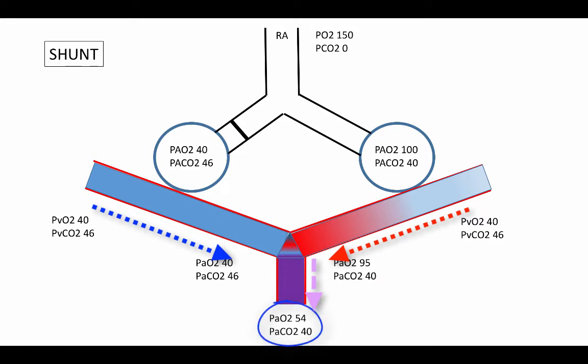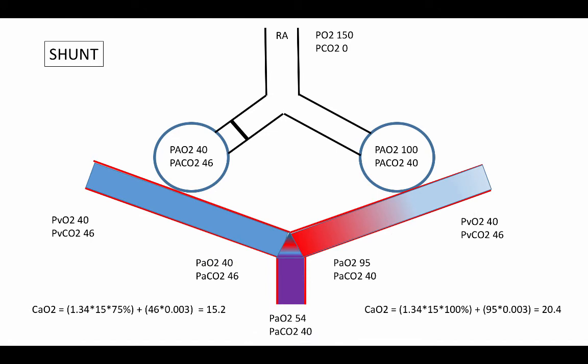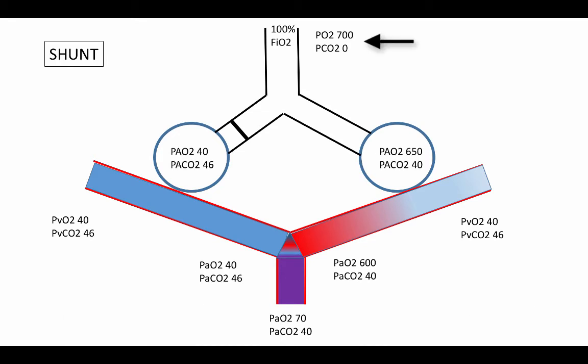But the partial pressure of oxygen is still low. This is because the resulting partial pressure of oxygen is not just the simple averaging of the partial pressures of oxygen from the two blood sources, but rather it's the average of the oxygen content from these two blood sources. And as I mentioned before, the oxygen-bound hemoglobin component is the largest component of the oxygen content, not the partial pressure of oxygen.